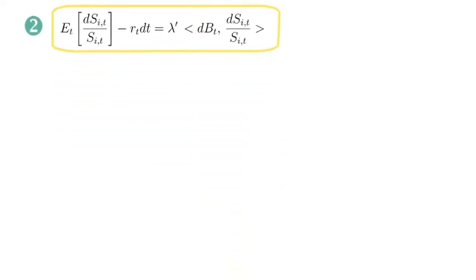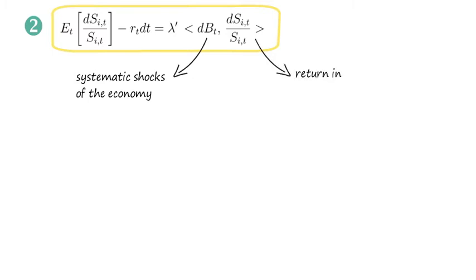Next we turn to prove the second relationship. We want to prove that the conditional expected risk premium of an asset i equals lambda transpose times the instantaneous covariation between the systematic shocks of the economy dB and return innovations of asset i.